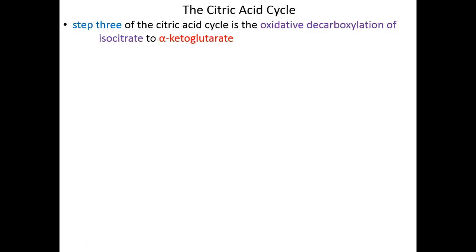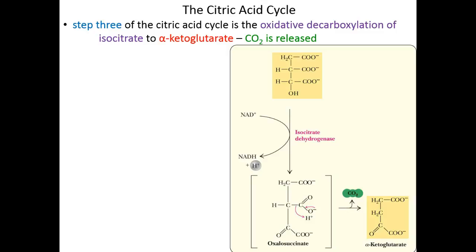Step three is our first of two successive oxidative decarboxylation events, which will convert isocitrate into alpha-ketoglutarate. Since this is a decarboxylation reaction, carbon dioxide is going to be released, and if it's an oxidative decarboxylation, we also expect the theft of electrons and protons. It is the redox reaction that occurs first — electrons and protons are ripped from isocitrate — leaving an unstable intermediate which rapidly and spontaneously decarboxylates into alpha-ketoglutarate. First we steal the electrons and protons, and then carbon dioxide essentially pops off all on its own.